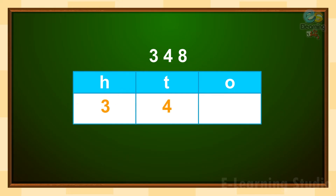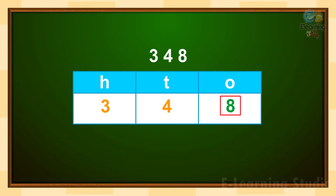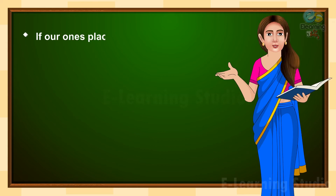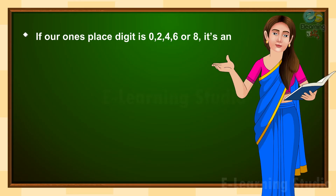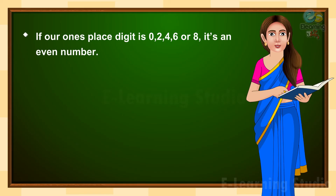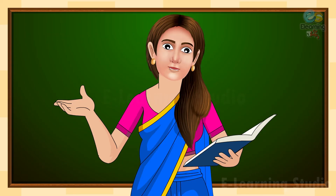Let's take an example. This is the number 348. Here, 3 is in the hundreds place, 4 is in the tens place, and 8 is in the ones place. According to our even numbers rule, check the digit in the ones place — here it is 8. If the ones place digit is 0, 2, 4, 6, or 8, it's an even number. So 348 is an even number.